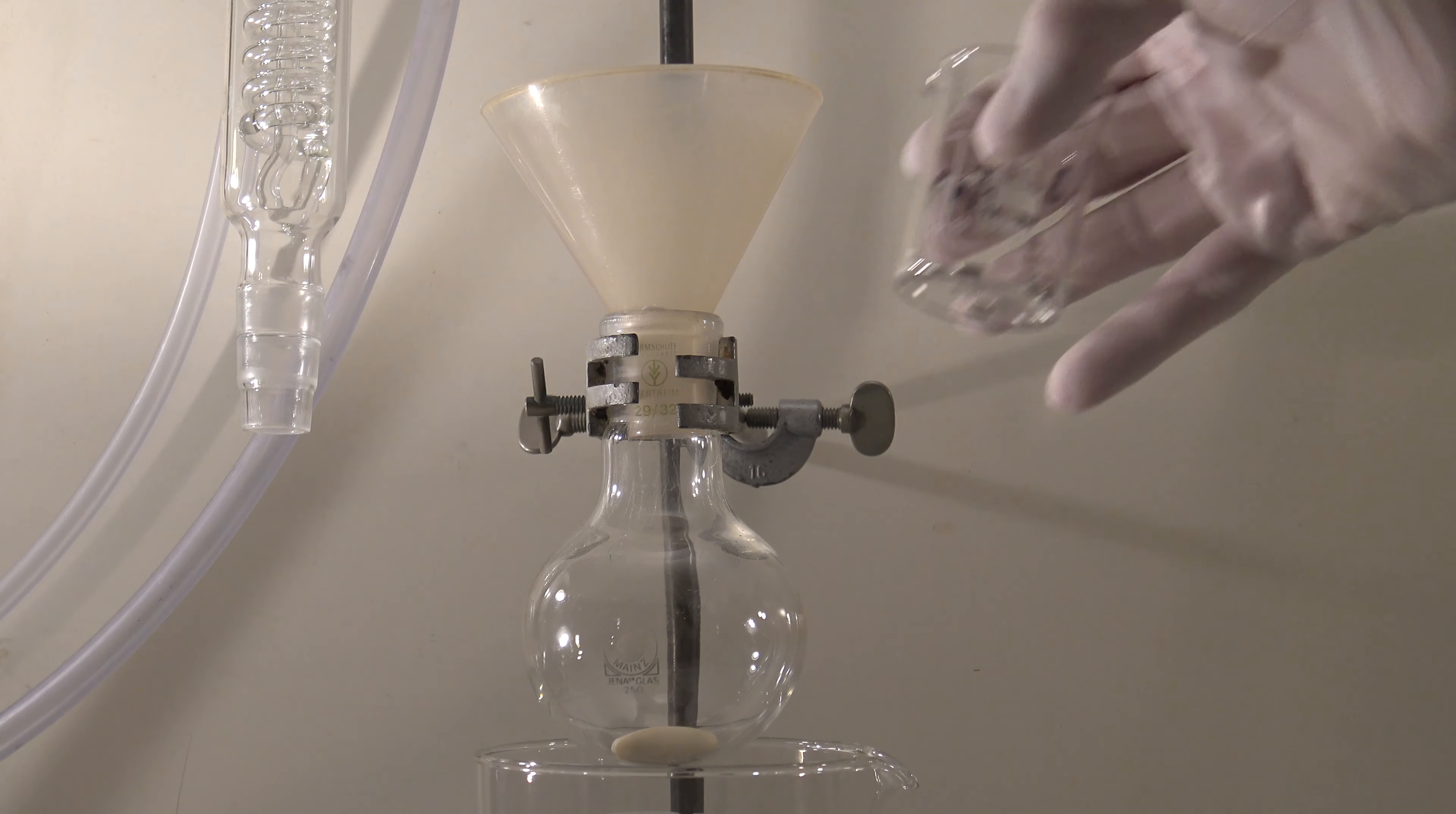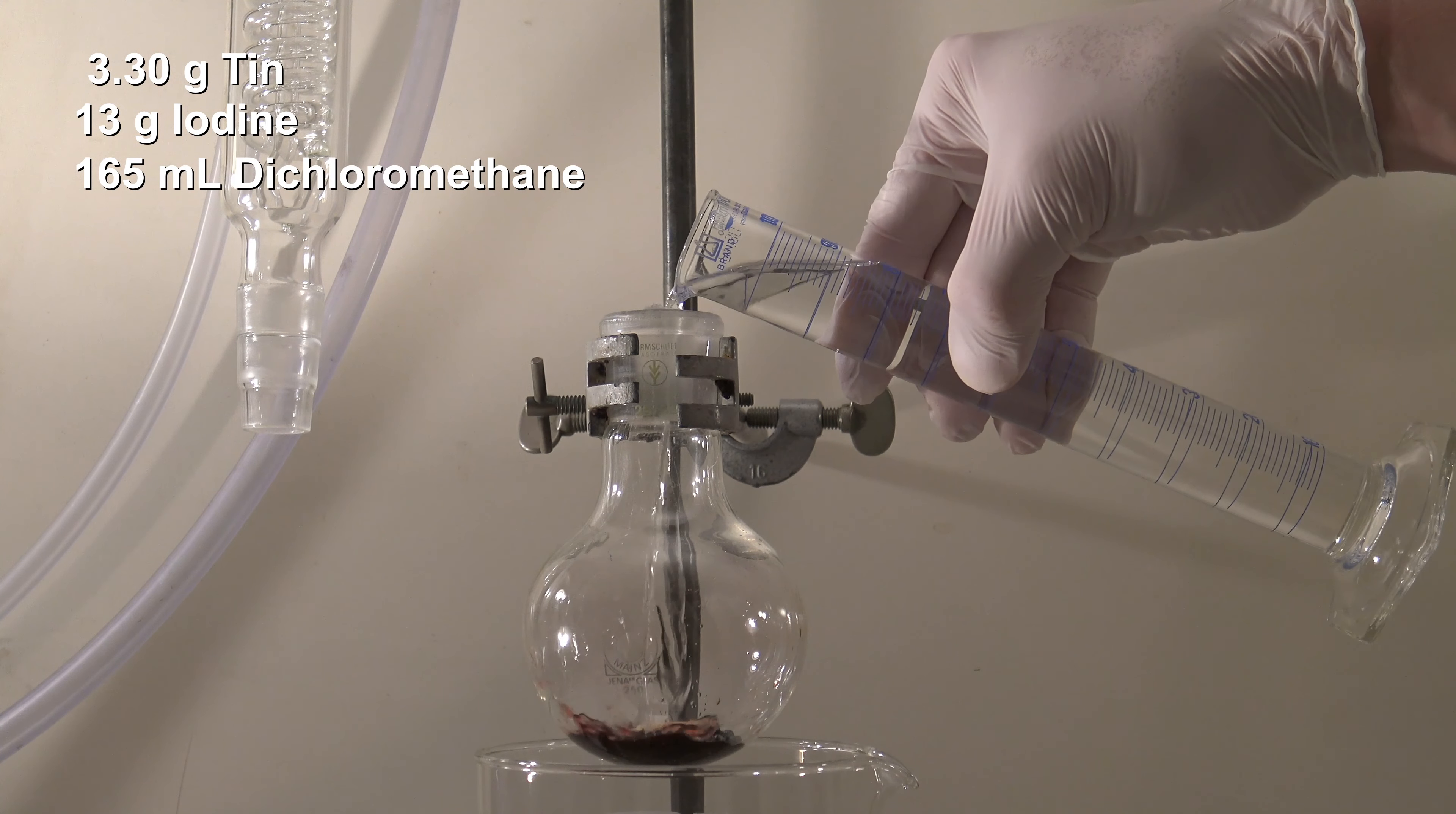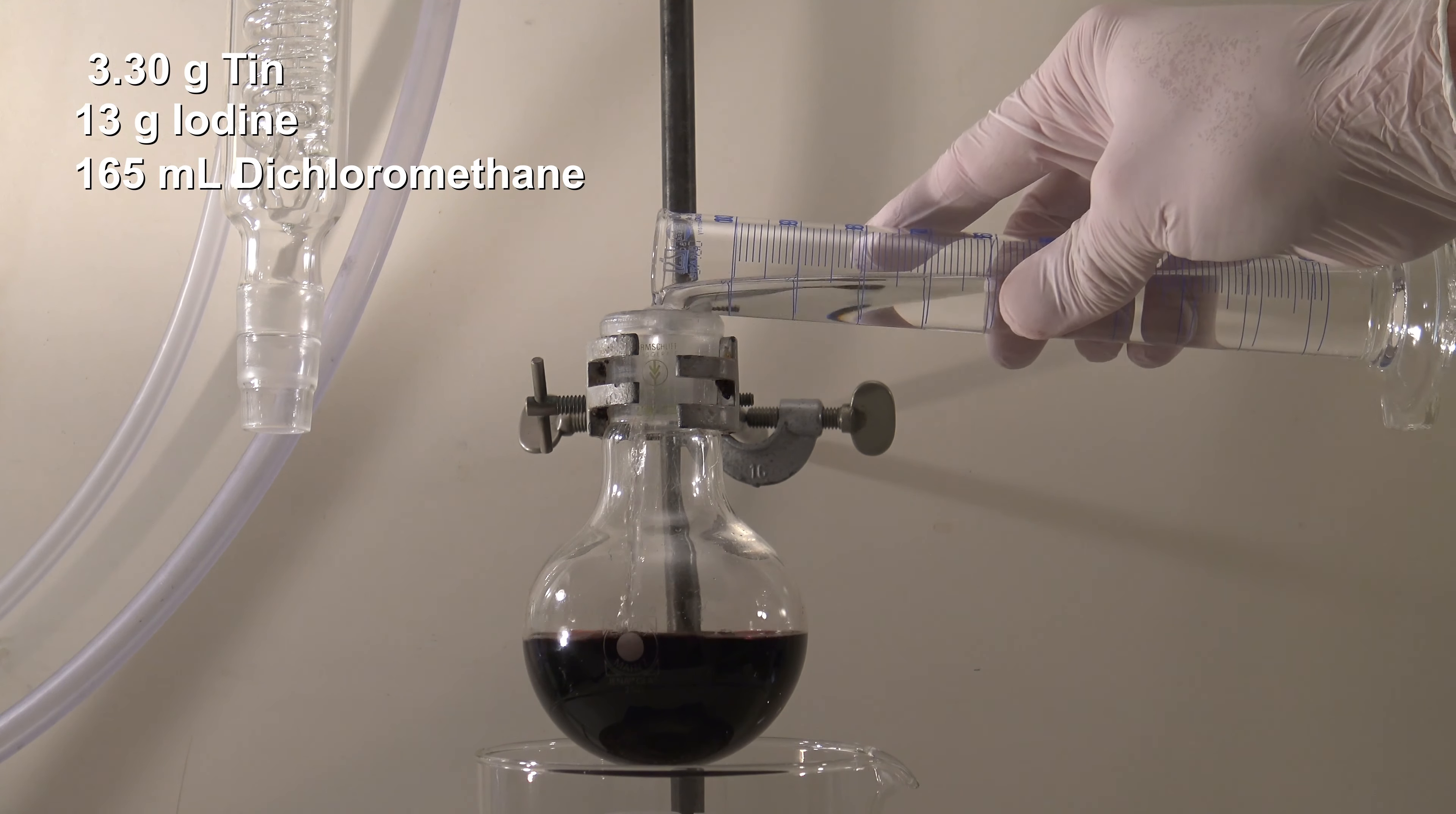To the round bottom flask the following was added: 3.3 grams of tin, 13 grams of iodine, and 165 milliliters of dichloromethane. Then a Dimroth condenser was added and the mixture was heated to reflux with a water bath.